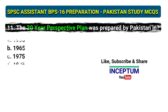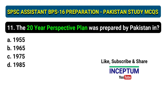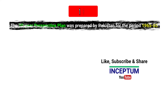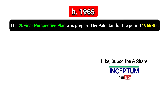Question 11: The 20-year perspective plan was prepared by Pakistan for which period? The correct answer is option B, 1965. The 20-year perspective plan was prepared by Pakistan for the period 1965 to 1985.